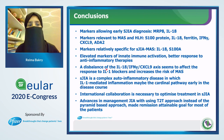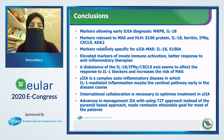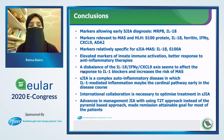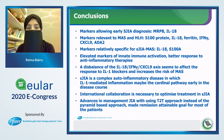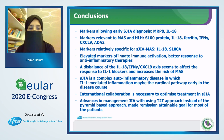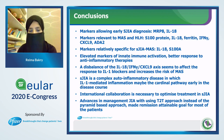In conclusion: markers allowing early systemic JIA diagnosis are MRP-8 and interleukin-18. Markers relevant to MAS and HLH are S100 protein, IL-18, ferritin, interferon gamma, CXCL9, and ADA2 activity. Markers specific for systemic JIA and MAS are IL-18 and S100 protein. Elevated markers of innate immune activity show better response to anti-inflammatory therapies. The imbalance of the IL-18/interferon gamma/CXCL9 axis affects response to IL-1 blocker and increases risk of MAS. Systemic JIA is a complex autoinflammatory disease in which IL-1-mediated inflammation may be the cardinal pathway early in the disease course. Advances in management using treat-to-target instead of the pyramid-based approach have made remission attainable for most, if not all, patients.